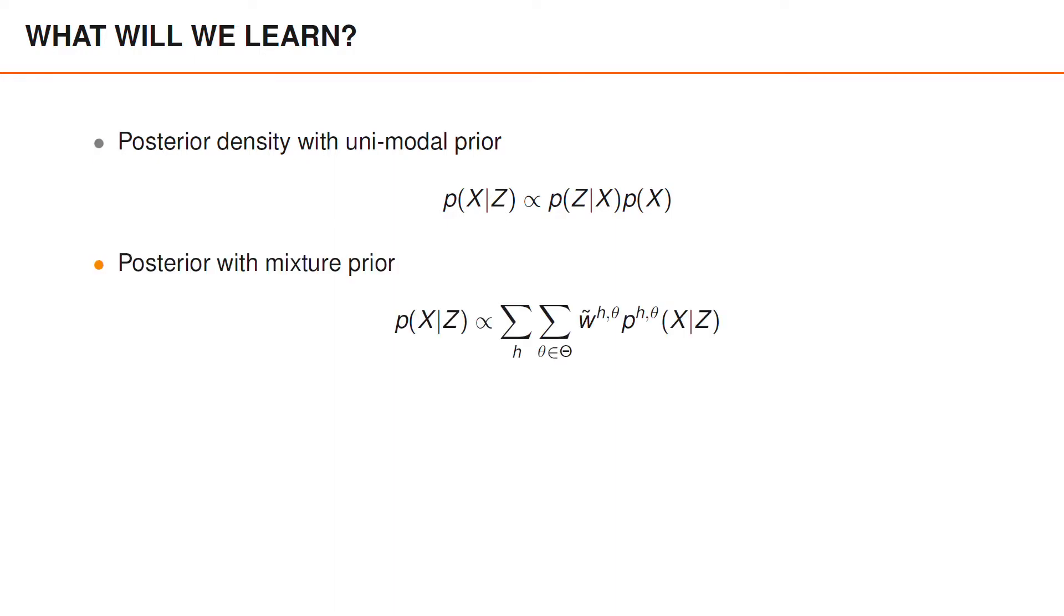After that, we will derive the expression for the posterior when the prior is a mixture density. And we will see that the posterior is proportional to the sum over the prior hypothesis h, a sum over the data associations, and then for each hypothesis and each association, we have a weight and a posterior density conditioned on the hypothesis and the association.